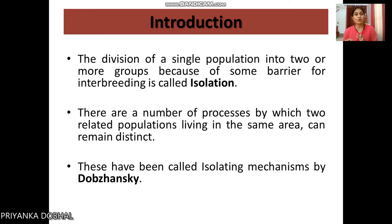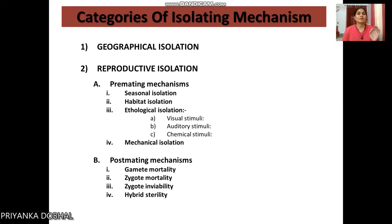According to Dobzhansky, there are two ways of isolating mechanisms. The first is geographical isolation and the second is reproductive isolation.